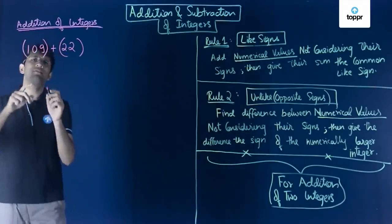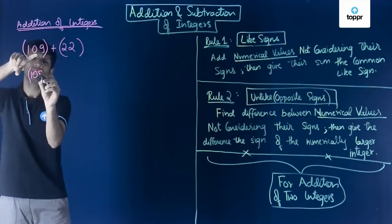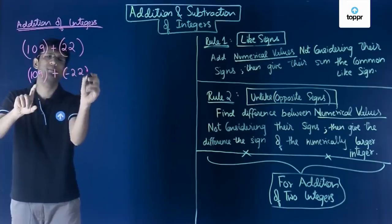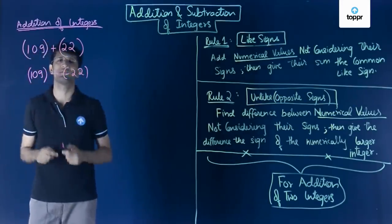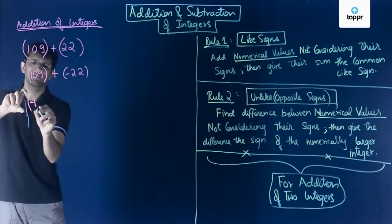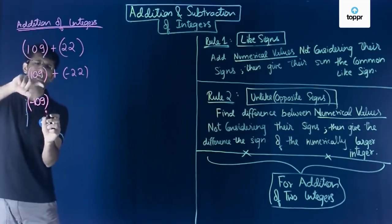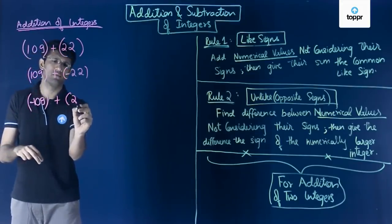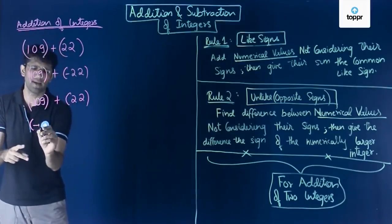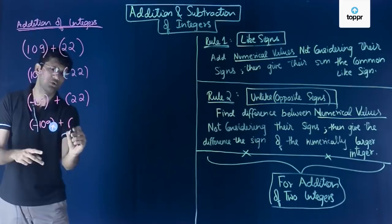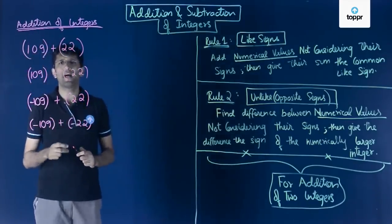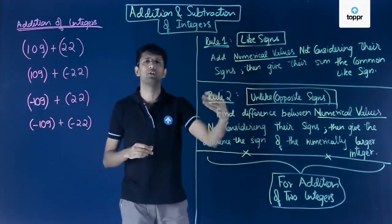In the second case, the first number is positive and the second number is negative. We can also have a case where the first number is negative and the second number is positive. And in the final case, both the first and second numbers are negative. So when dealing with addition of integers, we can get these four cases.